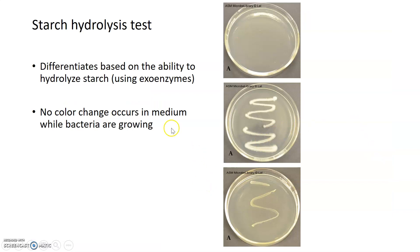The next test I'm going to talk about is a starch hydrolysis test and it differentiates between organisms based on their ability to break down or hydrolyze starch. Starch is a really big and bulky molecule. In order to digest starch, bacteria have to secrete exoenzymes or those exterior enzymes out into the media around them to digest the starch because they can't do it from the inside.